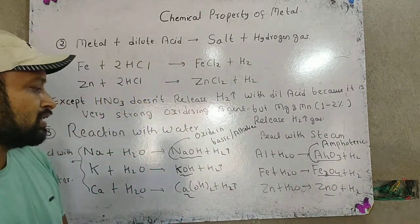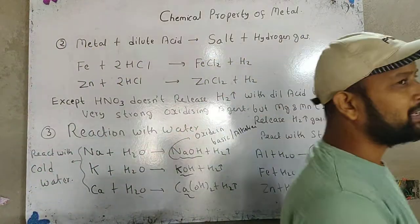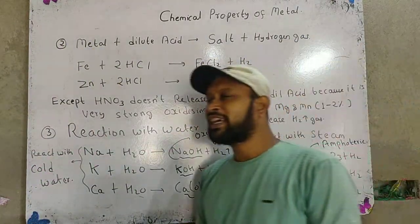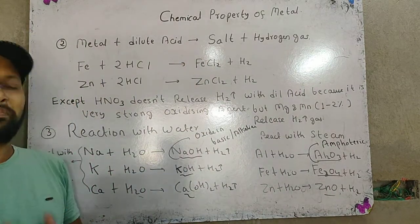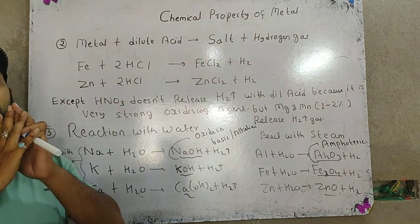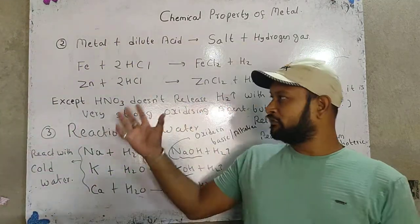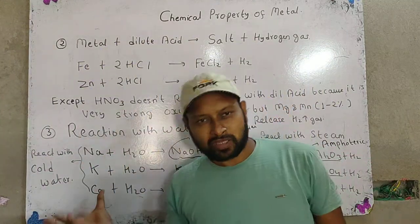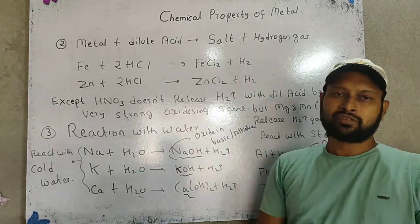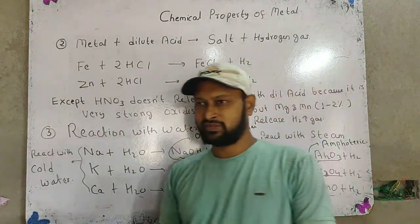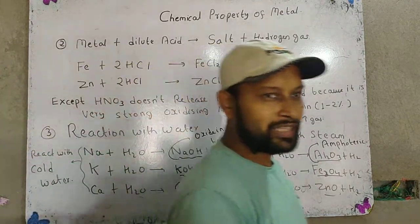Iron oxide, which can be acidic as well as basic in nature — that is the chemical property of the metal. I hope you have listened carefully. These are the chemical properties of metals, so ask me directly. Thank you.